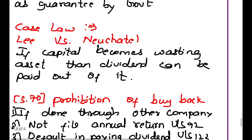Case Law: Lee vs. Neuchatel Asphalte Co. — if capital becomes a wasting asset, then dividend can be paid out of it. If the company's capital is just wasting away with no purpose, then out of that, the dividend can be paid.